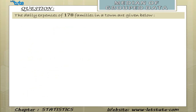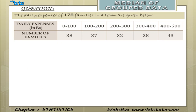The question is: the daily expenses of 178 families in a town are given below. We have been provided with data regarding the daily expenses in terms of rupees of 178 families. If we carefully notice, we have been given observations in the form of class intervals, meaning there is a lower limit and an upper limit. So our data has already been organized into groups — this is grouped data.